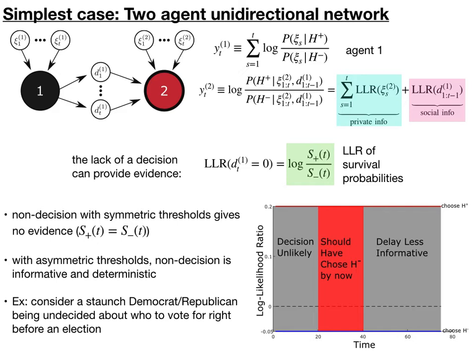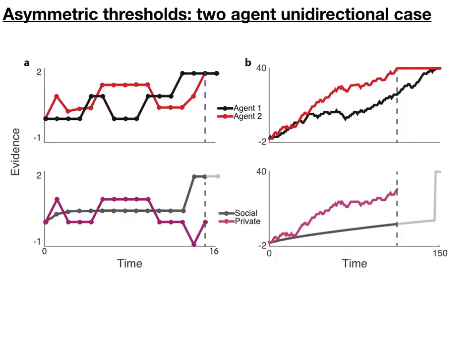So consider the case of an election. Maybe you have a friend that's a staunch Democrat or Republican. And maybe the night before the election, they still haven't made up a decision about who they're going to vote for. This suggests that they've gotten evidence in favor of the other candidate. And so you could potentially incorporate that evidence into your own decision making process. The fact that a person with strong biases somehow is indecisive suggests that they've gotten strong information opposite to their bias.